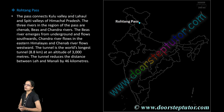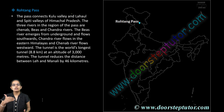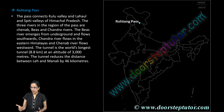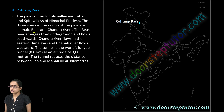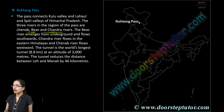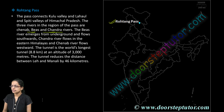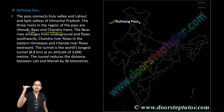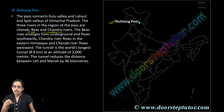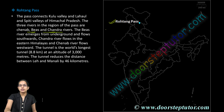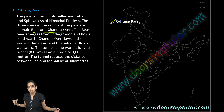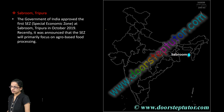The next is Rotang Pass. Looking at the spatial aspect, it connects the Kullu Valley and the Lahaul-Spiti Valley of Himachal Pradesh. Three rivers originate and pass through this region: the Chenab, Beas, and Chandra rivers. Recently, the world's longest tunnel at a height of 3,000 meters — nearly 8.8 kilometers long — has been constructed to reduce the distance between Leh and Manali by nearly 46 kilometers. This is why Rotang Pass has been in news.